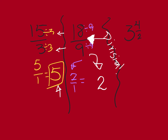Now this mixed number: three and four-halves. I'll bring the whole number three straight down for now. Four-halves — four divided by two — becomes two, a whole number. So I need to add the whole numbers together: three plus two equals five.